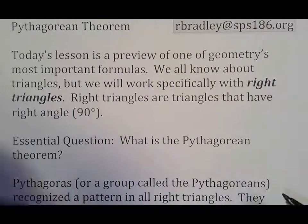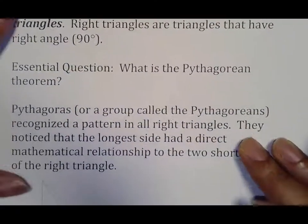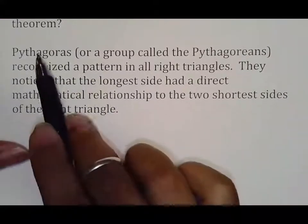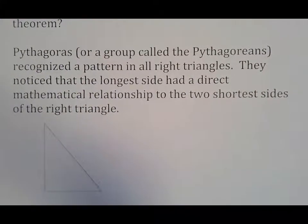Right triangles are triangles that have a right angle of 90 degrees. At least Pythagoras, or a group called the Pythagoreans, which pretty much was him and a bunch of people who used to just meet and discuss things that they recognized and come up with ideas, they noticed that the longest side had a direct mathematical relationship to the two shortest sides of the right triangle.